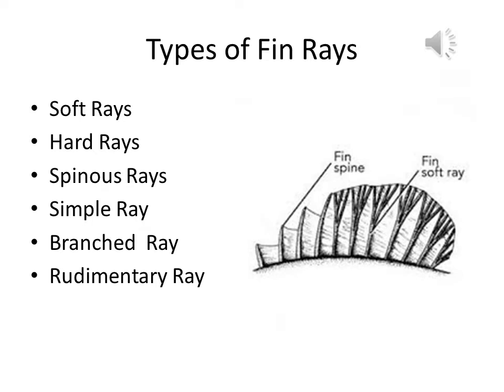There are different types of fin rays, based on the dorsal fin shapes and variations. Many types of dorsal fin shapes include concave with smooth spine, with serrated spine, with long anterior ray, simple unbranched ray, thickened principal ray, and branched ray. The types of fin rays are: soft rays, hard rays, spinous rays, simple rays, branched rays, and rudimentary rays.